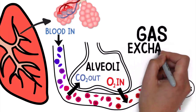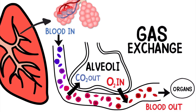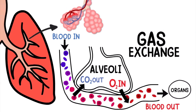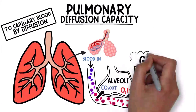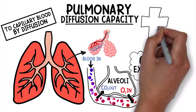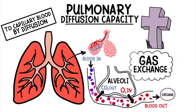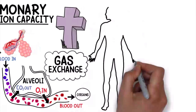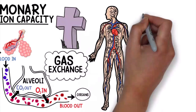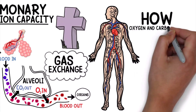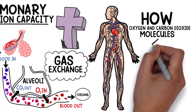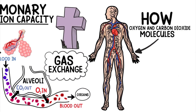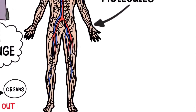This process is referred to as gas exchange, and without this process, humans would not be able to survive. While learning about pulmonary diffusion, it's important to know how oxygen and carbon dioxide molecules are transported in the body.